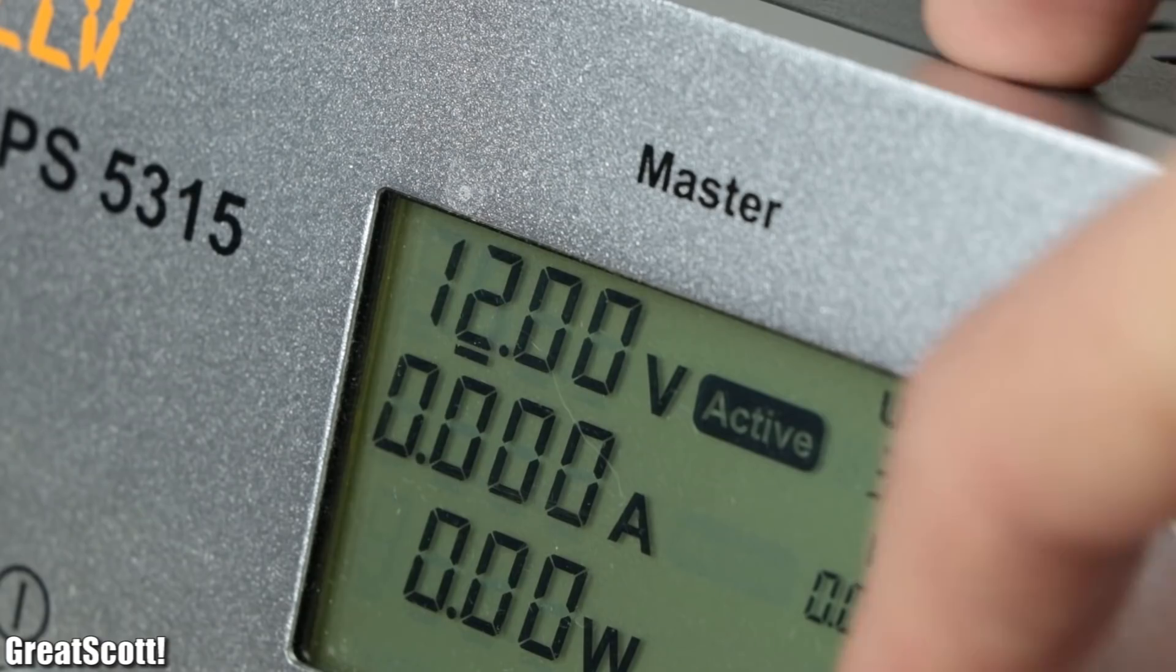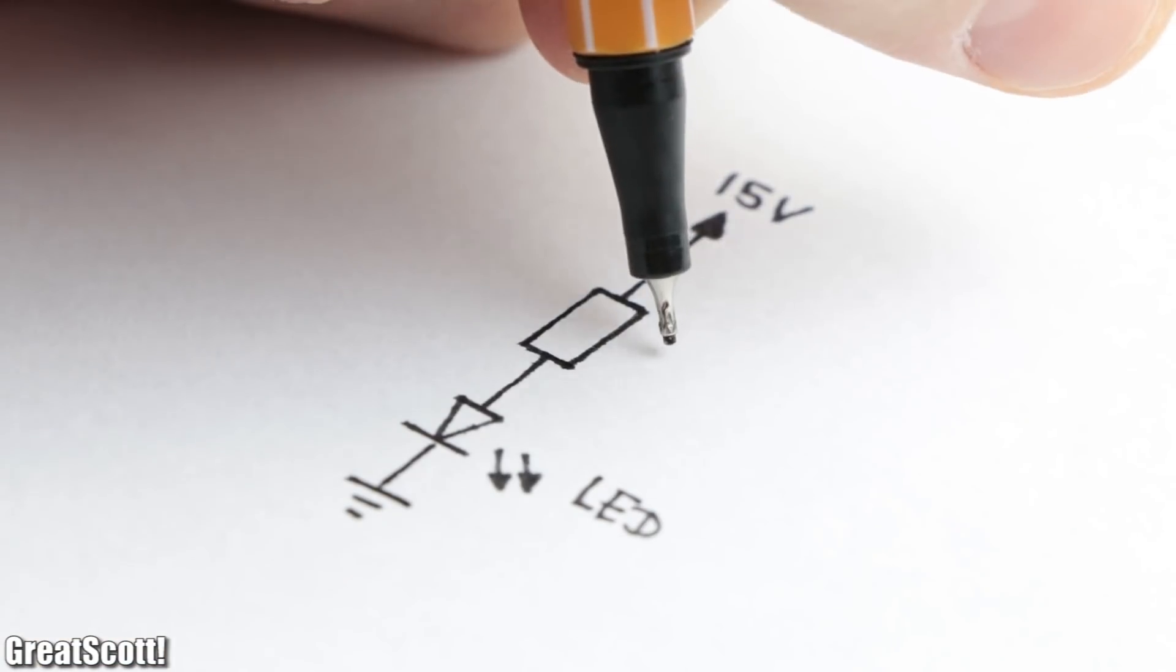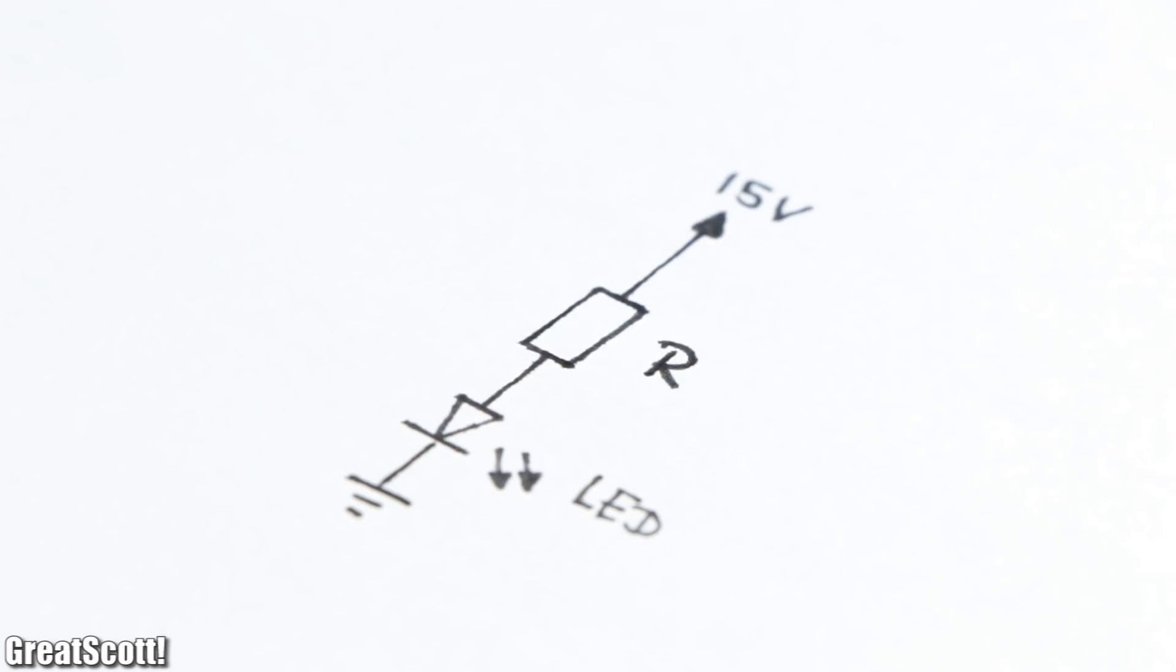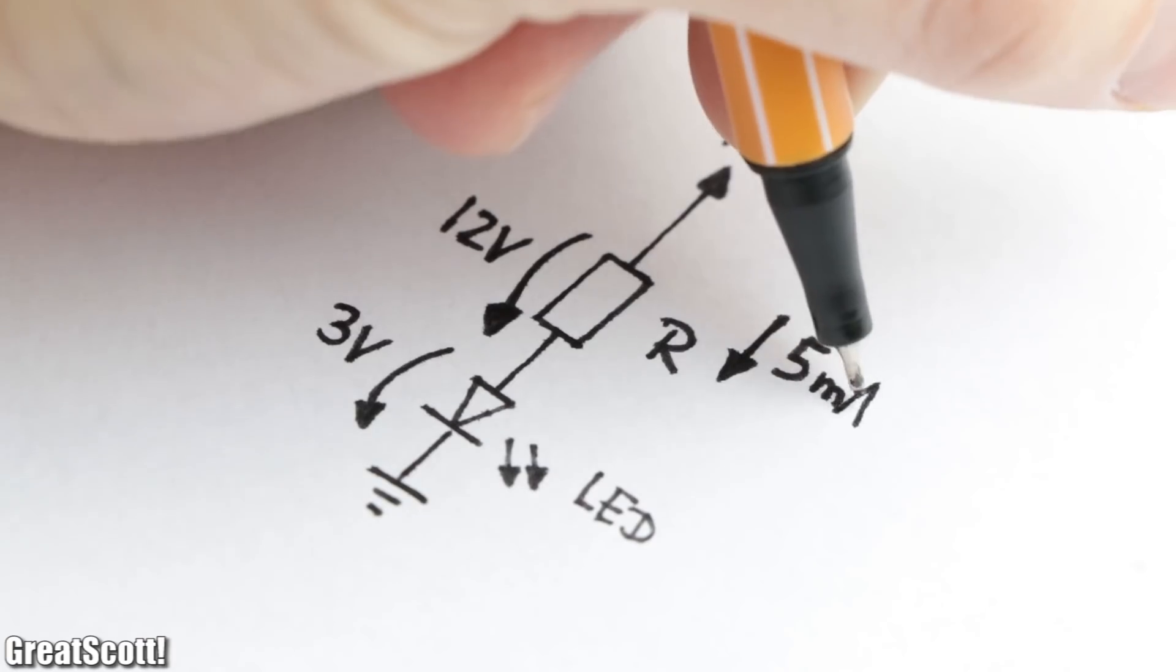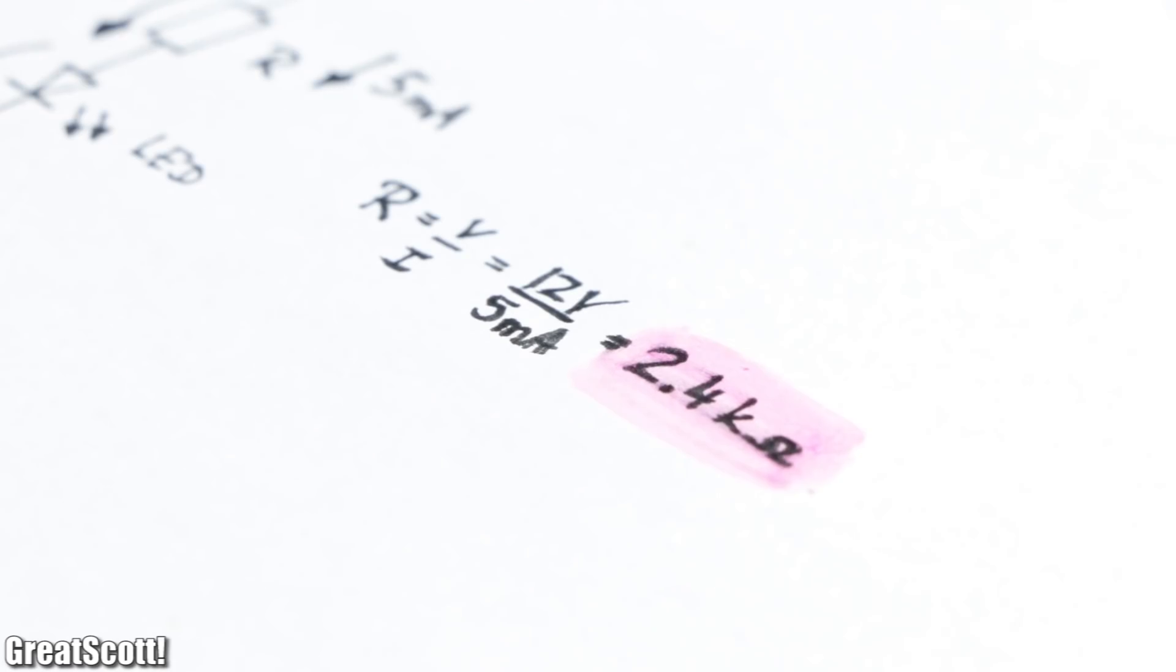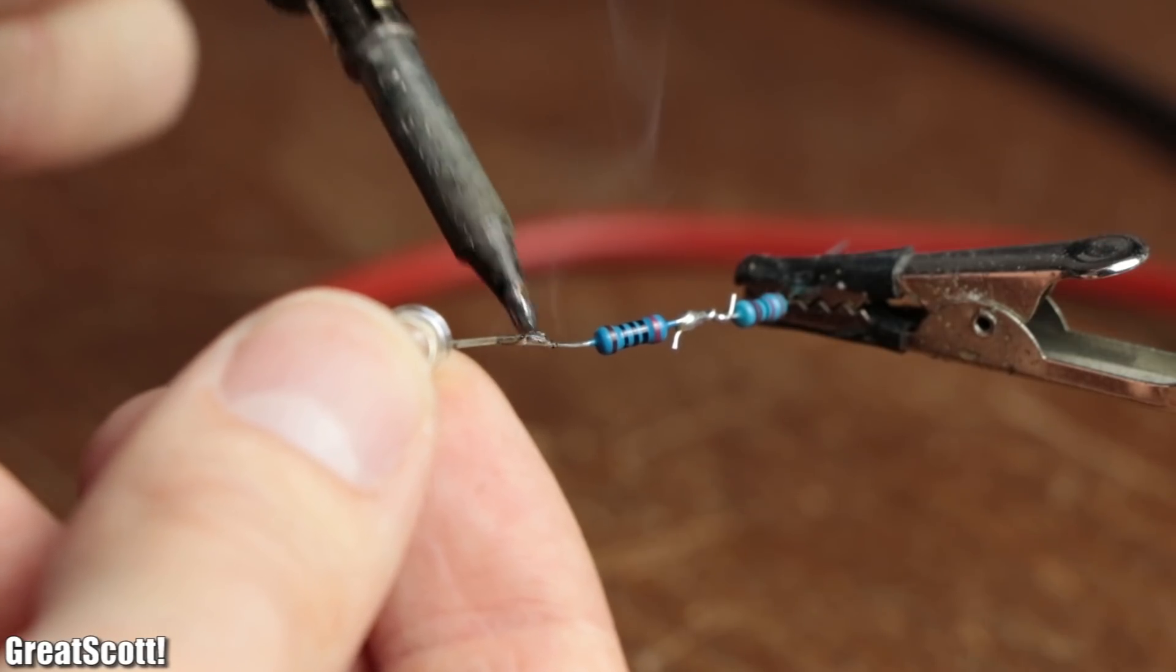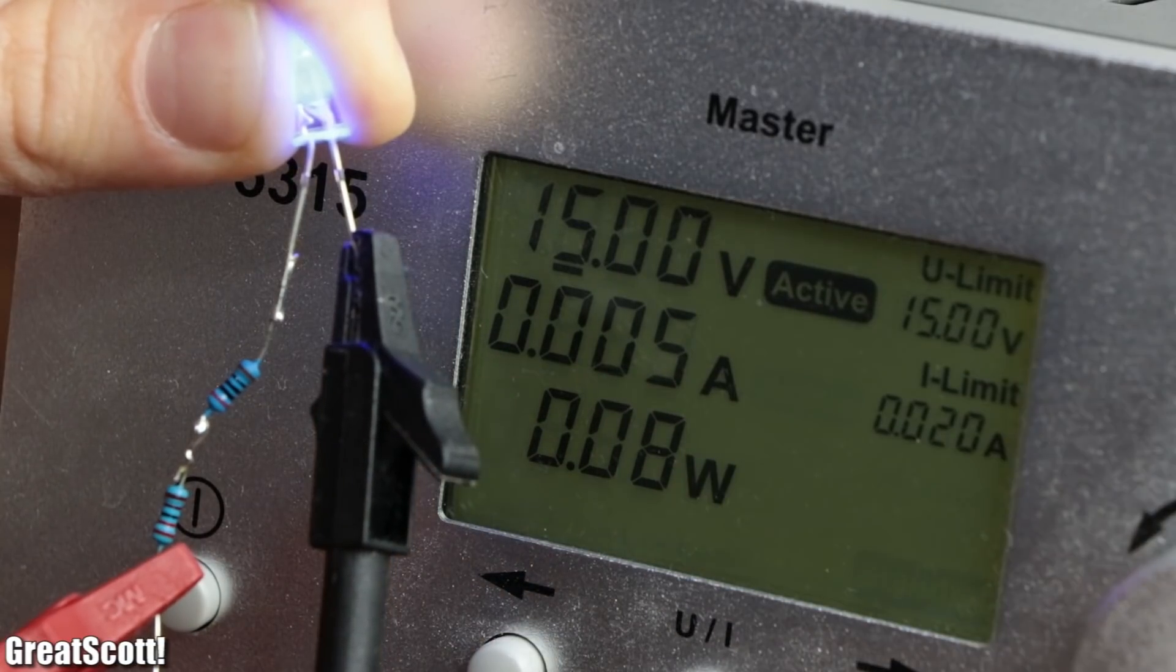Now if we have a higher voltage like for example 15 volts, we would only need to add a resistor in series with the LED. Since 12 volts would need to drop across it and we want a current flow of 5 milliamps, the resistor value would calculate to 2.4 kilo ohms. After building up the real life circuit with the proper resistor value, we can confirm that our calculations were correct.